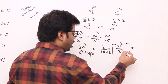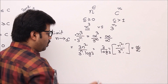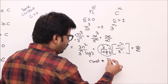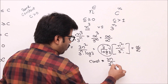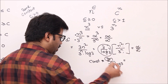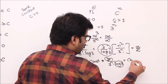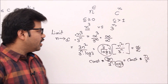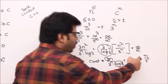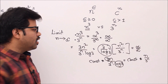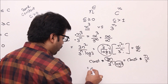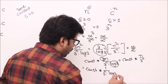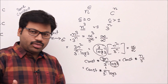Since we still have ∞/∞, we apply L'Hôpital's rule again. The derivative of n² is 2n and the derivative of 3^n is again 3^n · ln 3. Combining constants, we get constant × n / 3^n. So the numerator has reduced further — it was n³, then n², and now n — while the denominator remains 3^n.